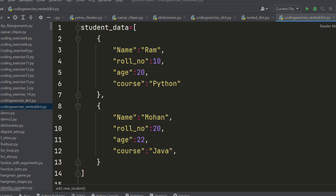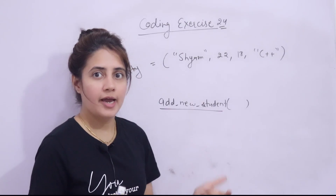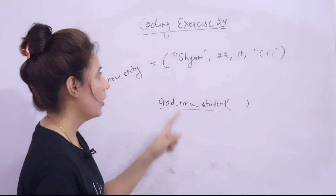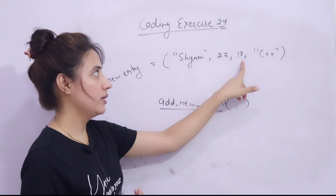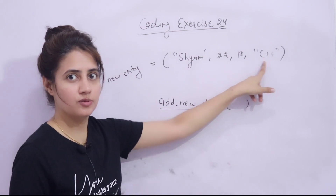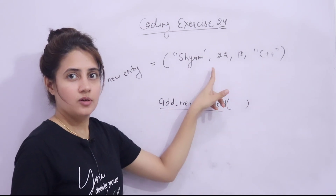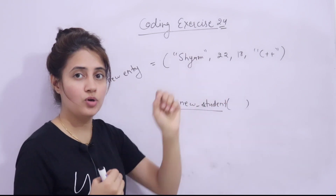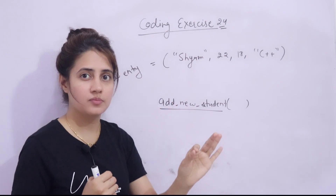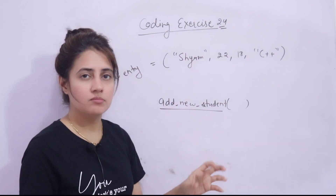What you have to do in this exercise: you have to add a new entry in this list. This is a list having two dictionaries, so now you have to add one more entry here. The new entry you have to add is: name of the student is Shyam, then roll number, age, and the course opted is C++. Four entries in the form of a dictionary — so a third dictionary you have to add in this list.